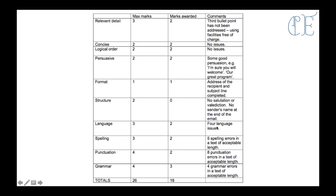Language was two out of three — four language issues because it wasn't formal enough. Spelling: there were five spelling errors in a text of acceptable length, so they only lost one mark there — two out of three. Punctuation: they lost two marks, there were eight punctuation errors in a text of acceptable length, so two out of four is quite high, which is nice for you guys if you do make some mistakes. And grammar: three out of four — four grammar errors in a text of acceptable length. So the more you write and the less mistakes there are, the more marks you'll get. If you write a nice big paragraph or two paragraphs that have a few mistakes in it, you'll get more marks because you've written more but there are less mistakes.